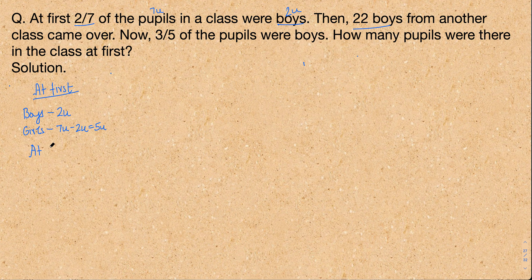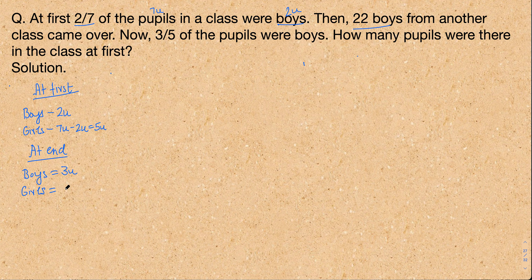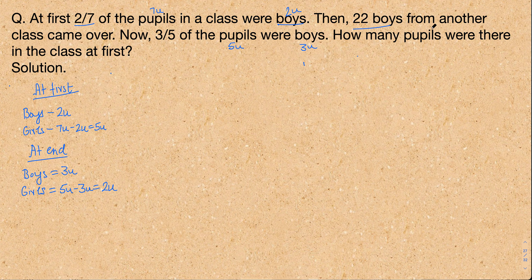After 22 more boys came in, the boys are now three-fifths of the total number of pupils. So at the end, boys are three units. The girls would be five units minus three units, giving two units. Now, they never said anything about girls coming or leaving the class.